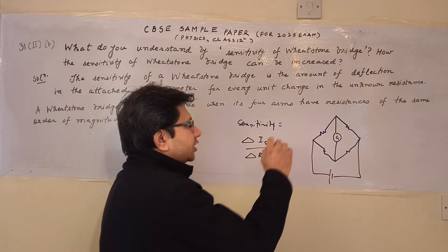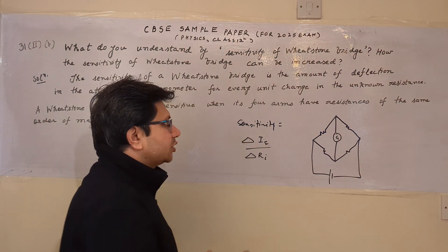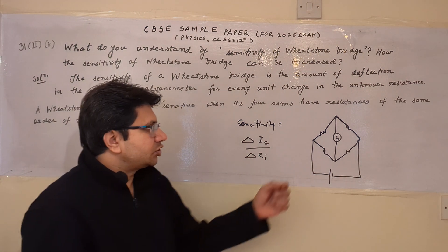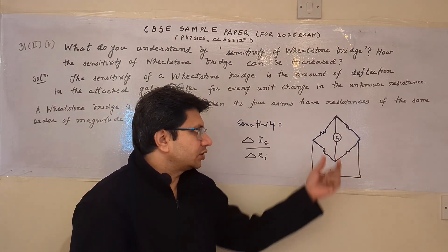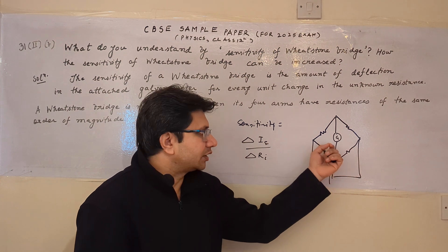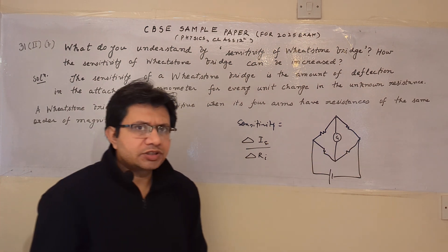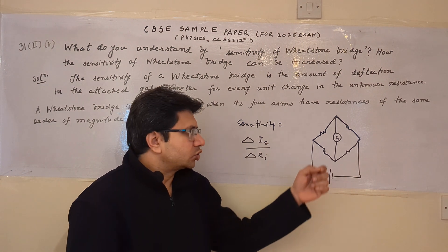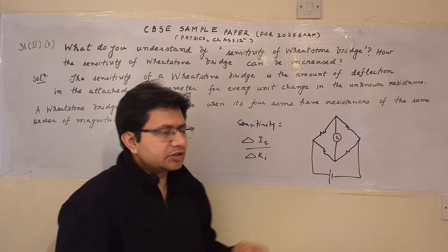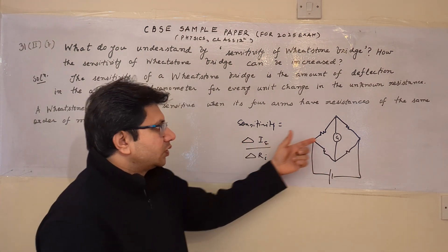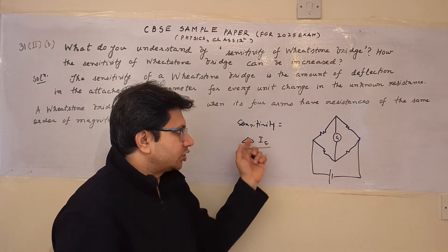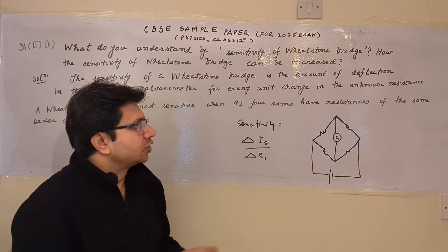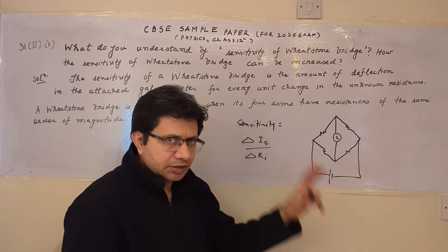Sensitivity is basically the change in output upon change in input. Here, the change in output is the galvanometer current, and the change is due to the change in the value of the unknown resistance. So sensitivity is basically the ratio of the change in deflection — which is due to the change in current — upon the change in the unit resistance value.